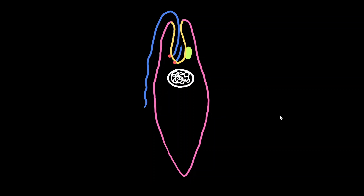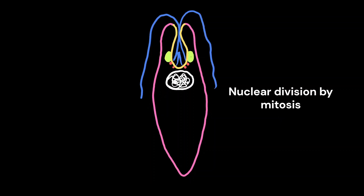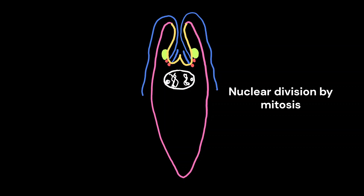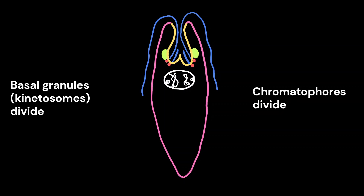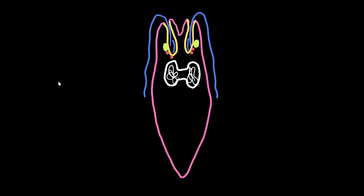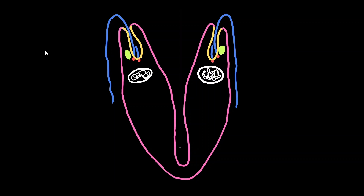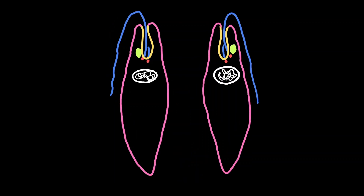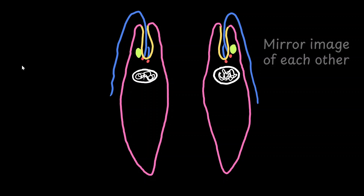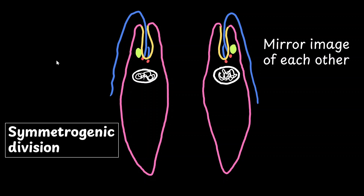During the process of fission, the nucleus, the basal granule, the chromatophores, and the cytoplasm undergo division. Initially, it starts with nuclear division by mitosis so that both daughter cells receive one nucleus each. This is followed by the division of kinetosomes and chromatophores. A longitudinal groove develops in the middle of the anterior end and extends gradually towards the posterior end until two daughter individuals are separated. The daughter euglenae resemble each other like mirror images, and this type of division is called symmetrogenic division.